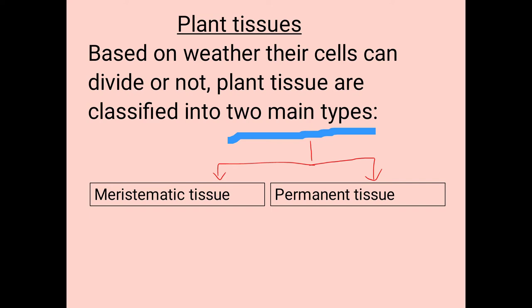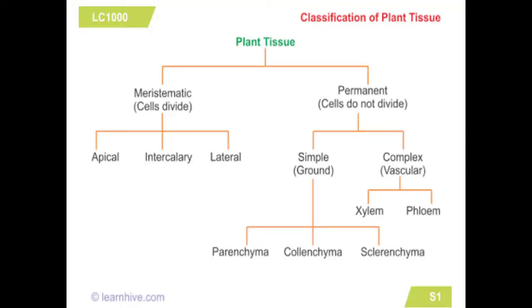Plant tissues are classified into two main types. One is meristematic tissue and the other is permanent tissue. Meristematic cells divide, while permanent tissue cells do not divide.